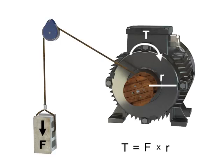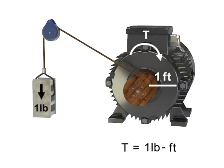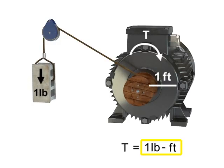Typical units of measurement for torque are pound foot. The torque illustrated here is equal to one pound foot.